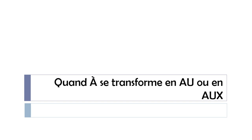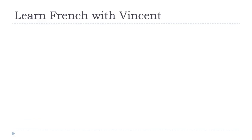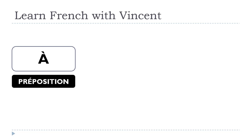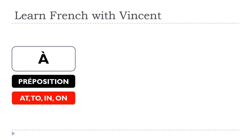So we will see in this lesson when À transforms into AU or AUX. The first thing we need to clarify is that À is what we call une préposition — a preposition. The English translation is always a bit tricky because it depends on the context, but it can mean 'at', 'to', 'in', or 'on'.